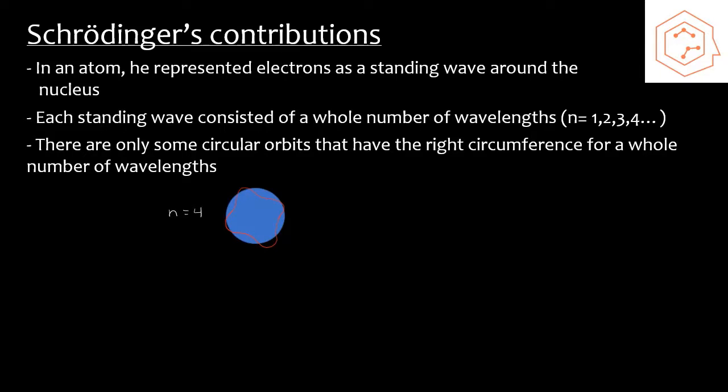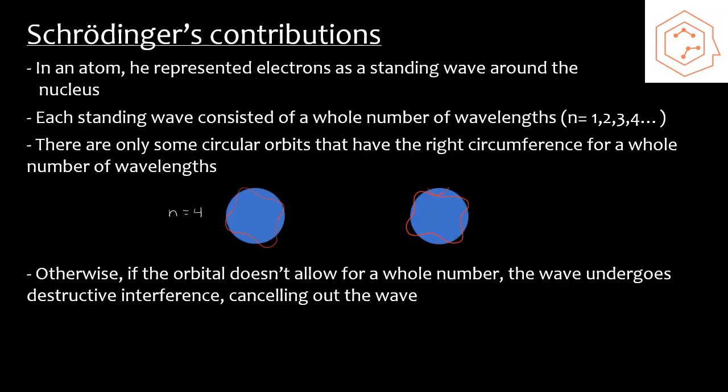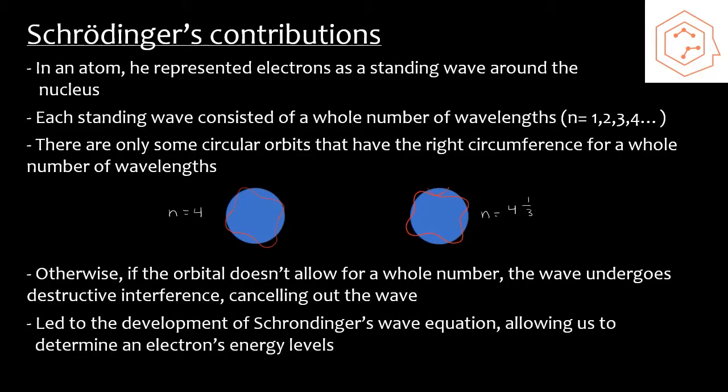All the other orbits that don't hold a whole number of wavelengths where their circumference actually corresponds to a mixed fraction - these waves will actually undergo destructive interference which cancels out the wave entirely, so they don't even exist, such as this wave here. This circumference corresponds to n equals four and one-third wavelengths, which we don't often see, and this wave doesn't exist since it cancels out. So this idea is consistent with the knowledge that electrons can only exist at certain energy levels around the nucleus, that idea of quantization. Schrödinger's work with quantum mechanics even led to the development of Schrödinger's wave equation, which allows us to determine an electron's energy level.